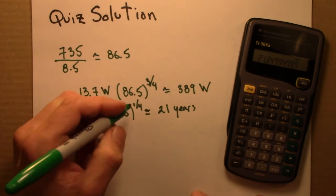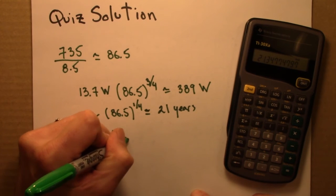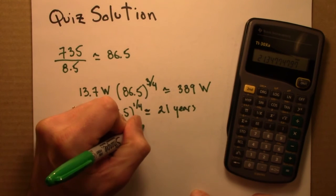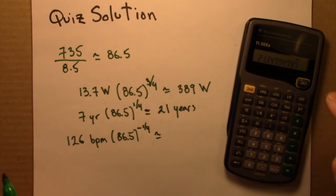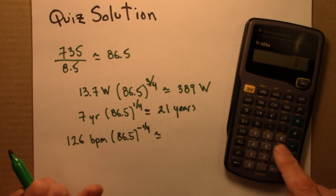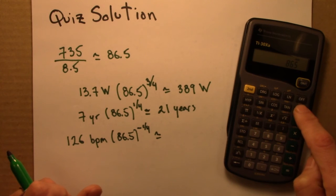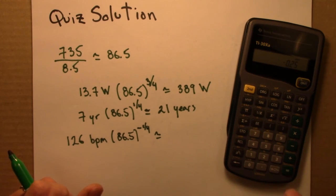This is a time that's going to go as a minus quarter power. So let's see what we get there: 86.5 to the negative 0.25, it's about 0.33.